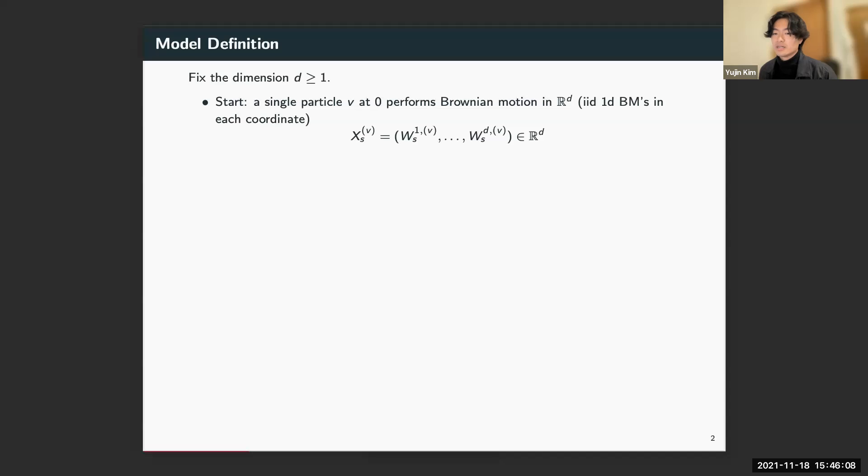So for clarity, let's define the branching Brownian motion model in R^d. I'll often just say BBM instead of branching Brownian motion for brevity. We start with a single particle at the origin, and the particle moves according to d-dimensional Brownian motion, so IID Brownian motion in each coordinate.